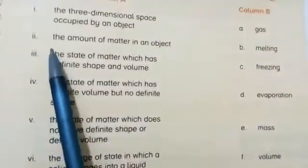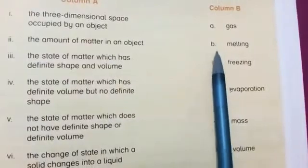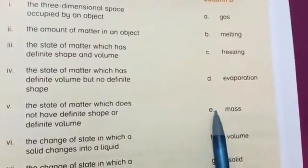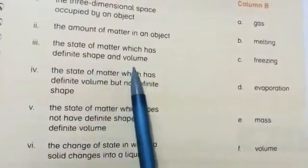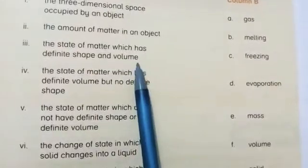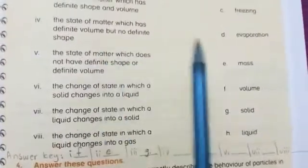Number 2: the amount of matter in an object — mass. Answer: 2E. Number 3: the state of matter which has definite shape and volume — solid. Answer: 3G.